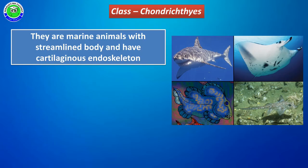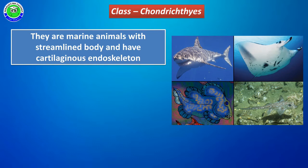The general characters of class Chondrichthyes: all members generally live in marine water, and all these members have a specialized streamlined body. The streamlined body means the body is long with tapering ends on both sides — at the front and back — which is a modification to move within a water habitat.